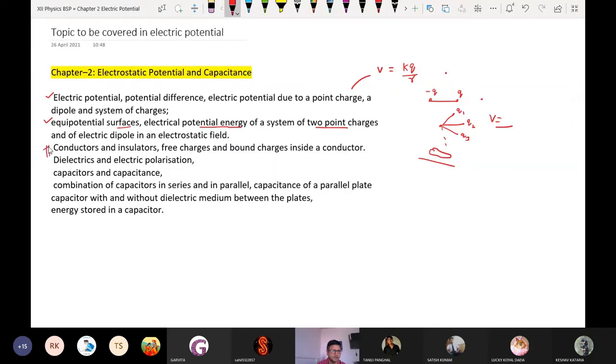The second part starts from here, that is conductors and insulators. Basic idea about these then free charges which are responsible for other results, bound charges, how the charges are connected with the nucleus. So innermost electrons which are present very close to the nucleus inside a conductor.